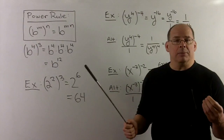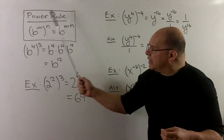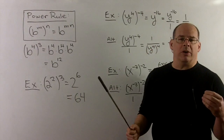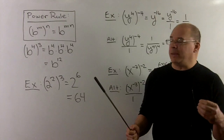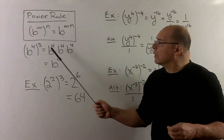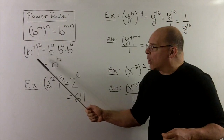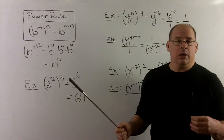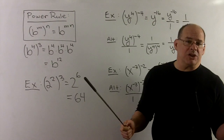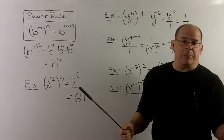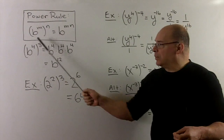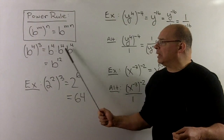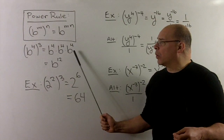To get a hint of why this is true — and we'll just do it with positive m and n — if I take b to the fourth power and raise that to the third power, the definition of raising to the third power is just take what's inside and write it out three times, so I get b to the four, b to the four, b to the four.